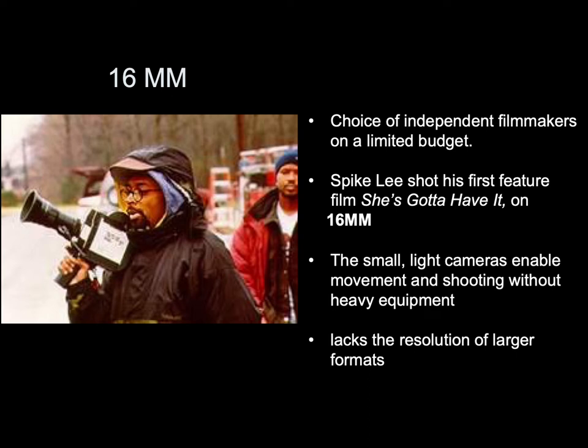16mm is the choice of independent filmmakers on a limited budget. Spike Lee shot his first feature, She's Gotta Have It, on 16mm. The small, light cameras enable movement and shooting without heavy equipment. While less expensive than IMAX and 35mm, 16mm lacks the resolution of larger formats.